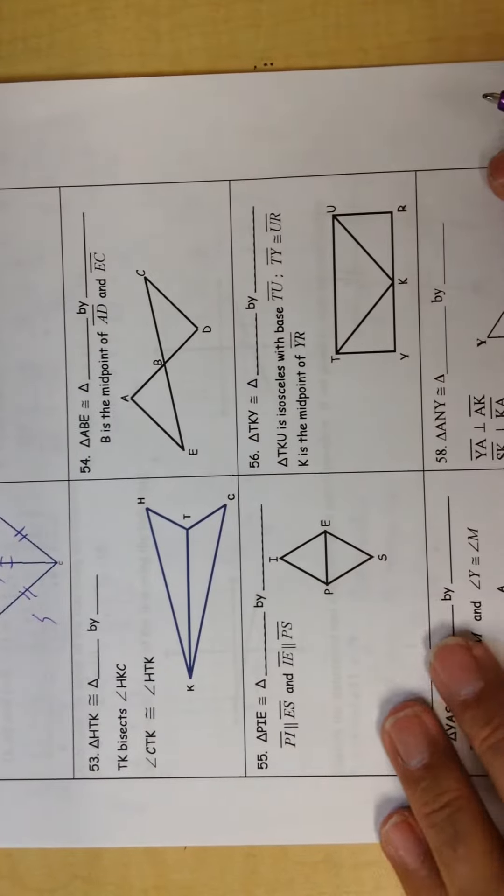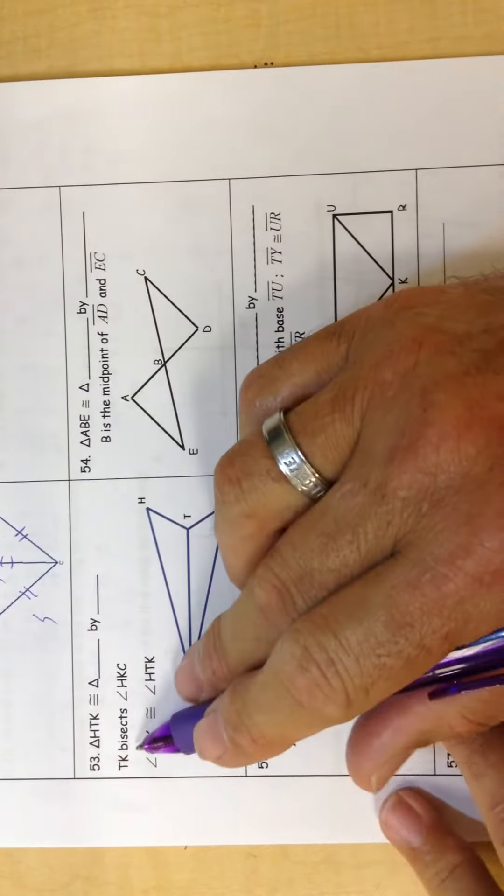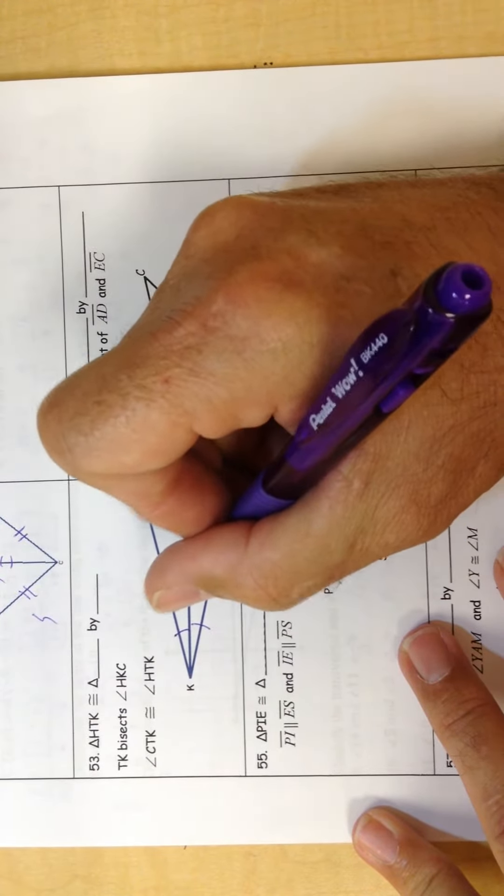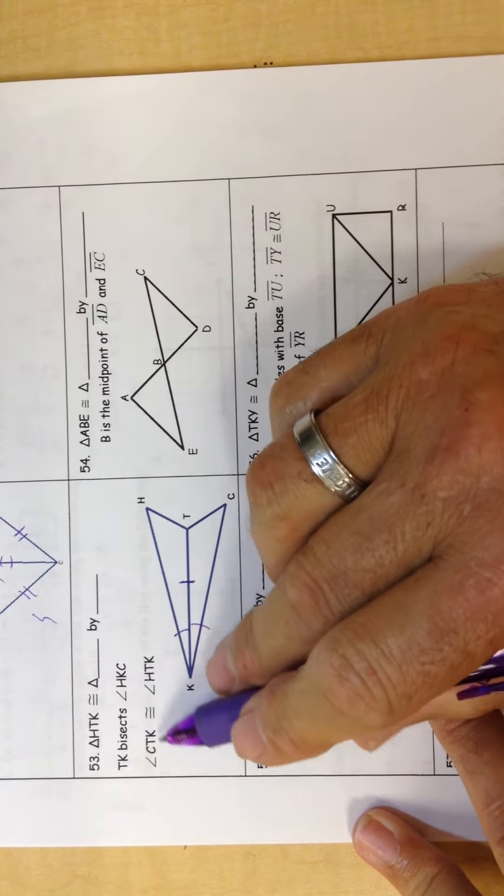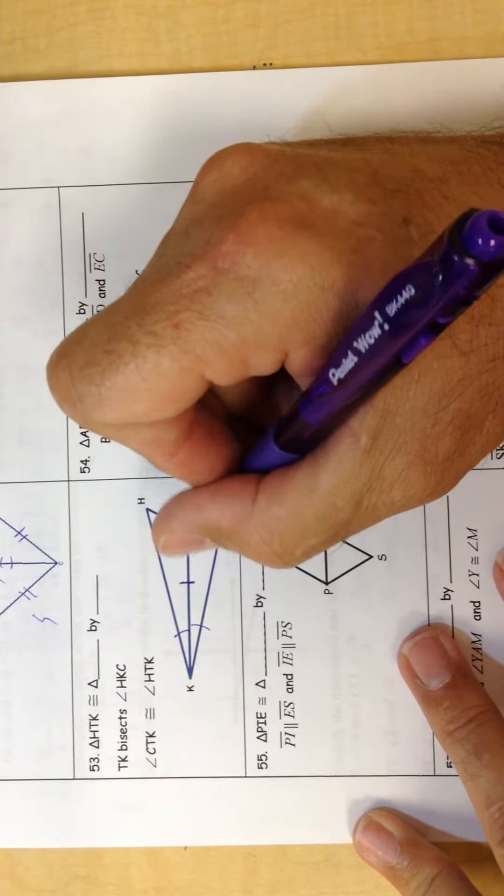Number 53, HTK. Okay, TK bisects HTC, so this is equal to this. These edges are the same. And then it says angle CTK is congruent to this angle.